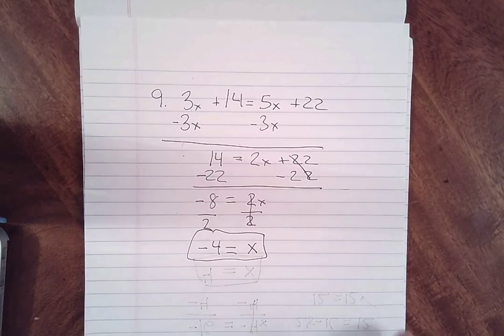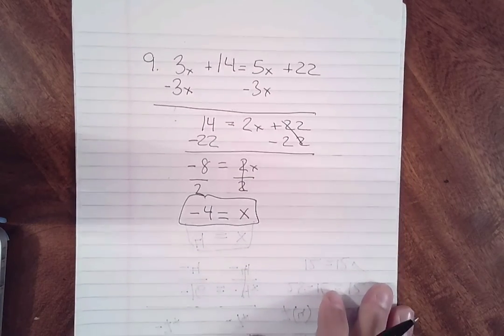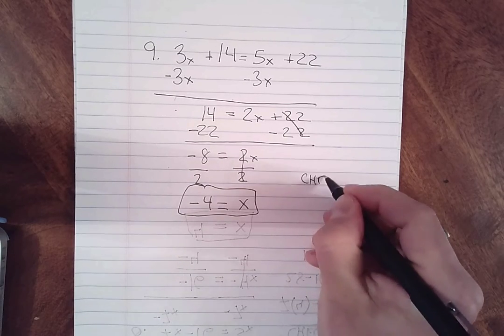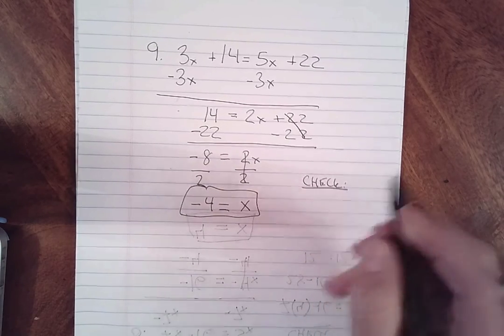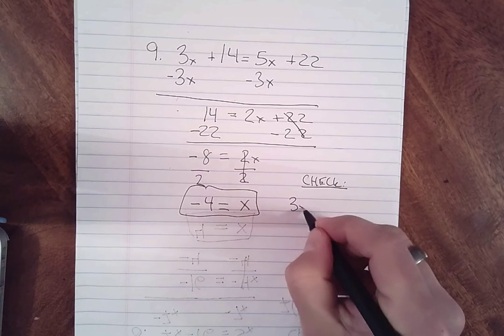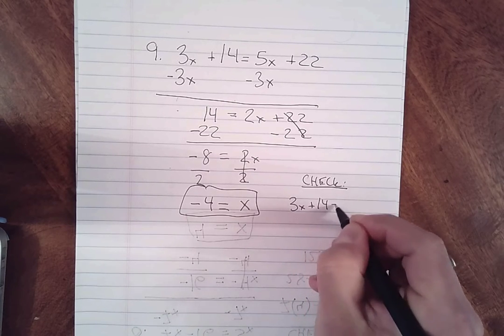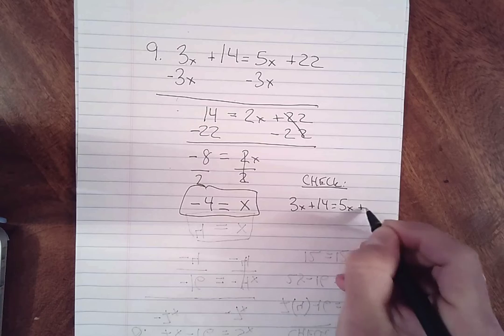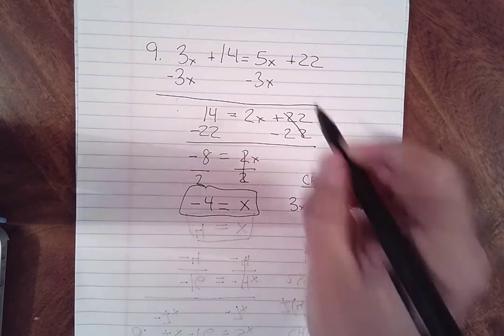So let's check this. I didn't leave much room up there, so I'm gonna do it right here to the side. So I have 3x plus 14 is equal to 5x plus 22. That's my original equation up here.